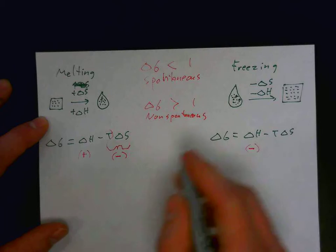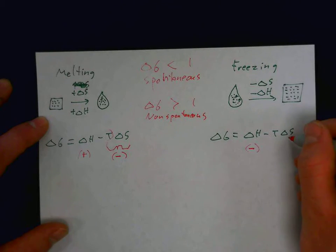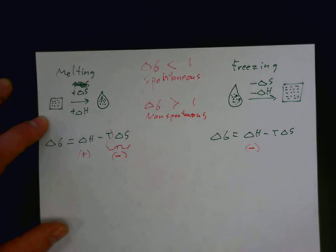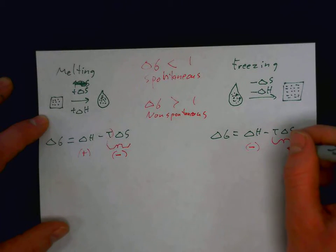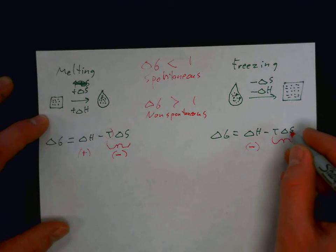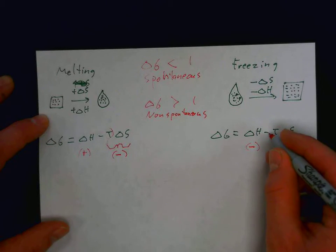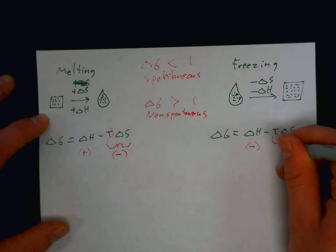Now, the entropy is negative, but as a term, this whole term would be positive. Because a negative entropy would get multiplied by this negative value, which would make this positive.